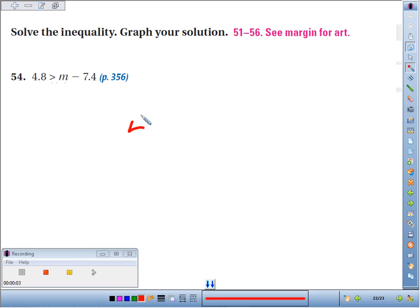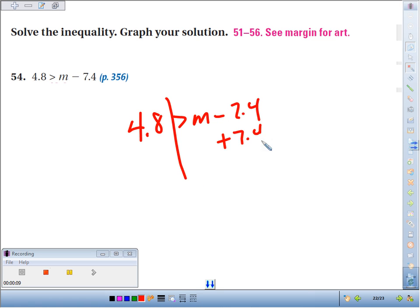Problem 54: we're going to solve the inequality 4.8 is greater than m minus 7.4. To solve, we want to get m by itself. You'd add 7.4 to both sides, and so 4.8 plus 7.4, let's add that up, equals 12.2.